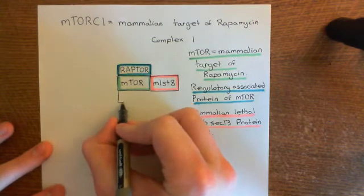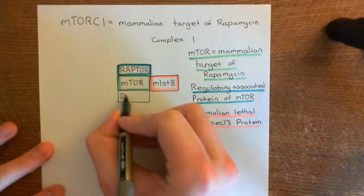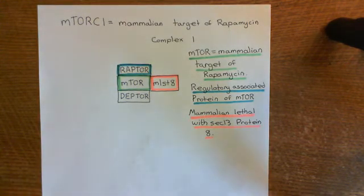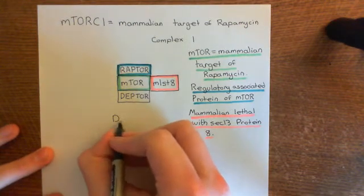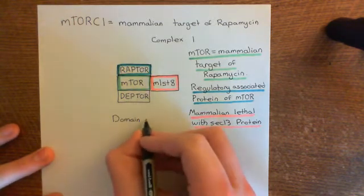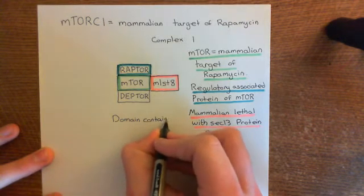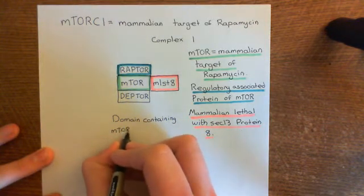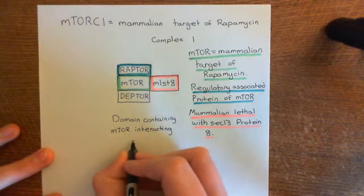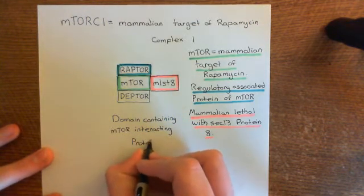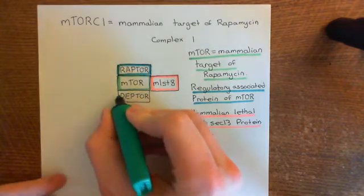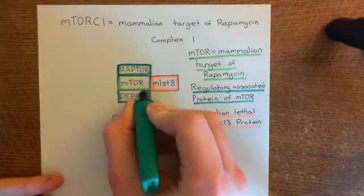Another major component is DEPTOR, which has a similar name to RAPTOR. This stands for the domain-containing mTOR-interacting protein. We'll cover DEPTOR in turquoise. This is another protein within the mammalian target of rapamycin complex 1.